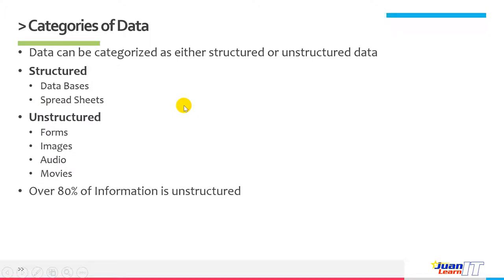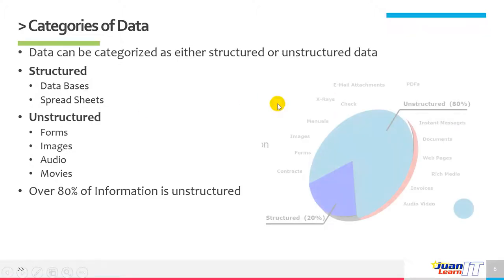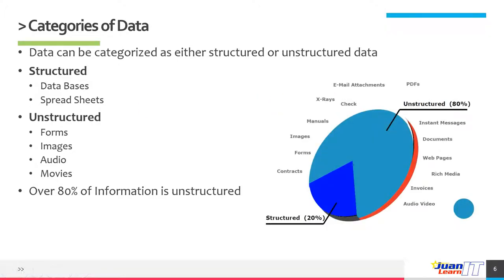80% of information is unstructured. With the presence of big data, research shows that 80% of information is unstructured. This pertains to audio, video, invoices, rich media, web pages, documents, instant messages, contracts, forms, images, manuals, x-rays, checks, and so on — including email attachments and PDFs. Whereas structured data is managed and arranged for searching, storage, and discovery in databases and spreadsheets.